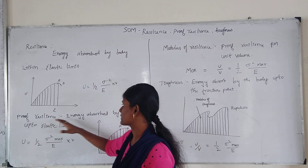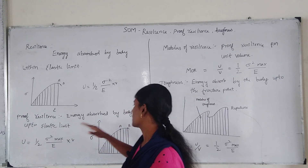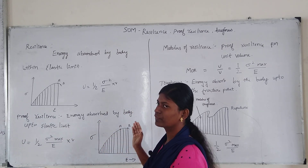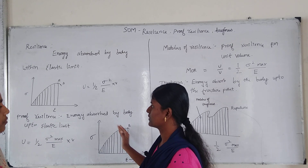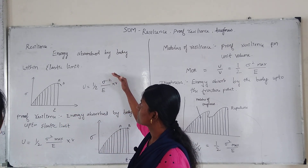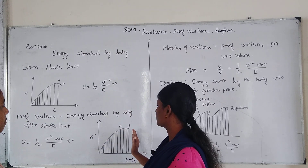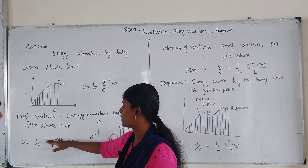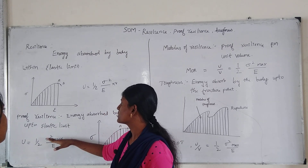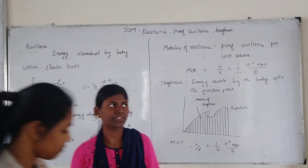Next, Proof Resilience. Proof Resilience is the energy absorbed by the body up to the Elastic Limit — how much energy is absorbed by the body up to the Elastic Limit. The formula is: U = (1/2) × σ² / E × V. This is Proof Resilience.